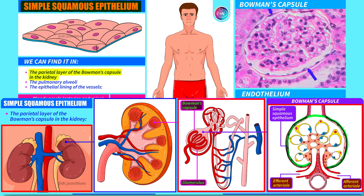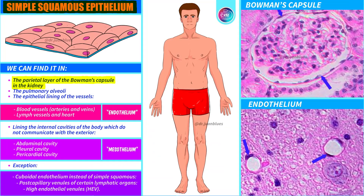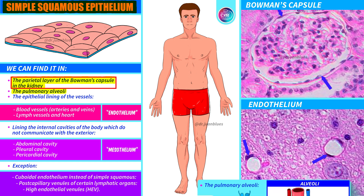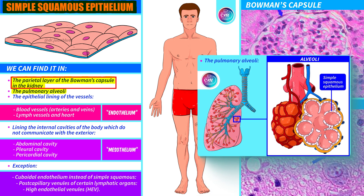Simple epithelium — all cells with a flat shape — simple squamous epithelium. To recap, we find it in the parietal layer of the Bowman's capsule in the kidney. We also find it in the pulmonary alveoli, covering them on the inside. See how inside the alveoli we have a single layer of flat cells: simple squamous epithelium.